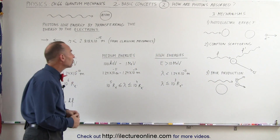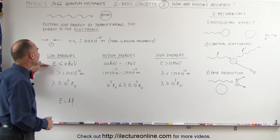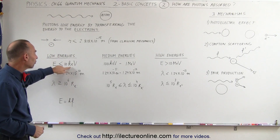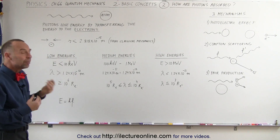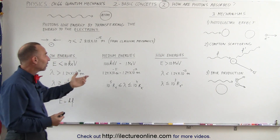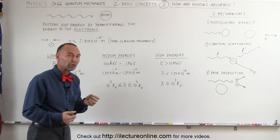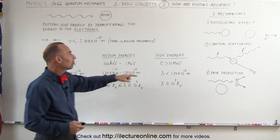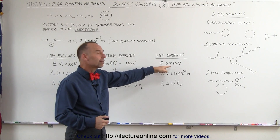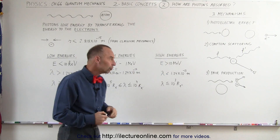The energy ranges we're talking about are: low energies are typically less than 10,000 electron volts; medium energies are anywhere from 100,000 to 1 million electron volts; and high energies are considered to be greater than 10 million electron volts.